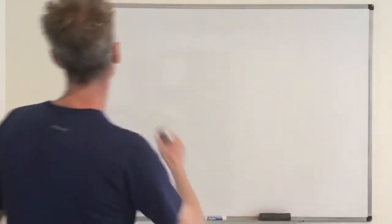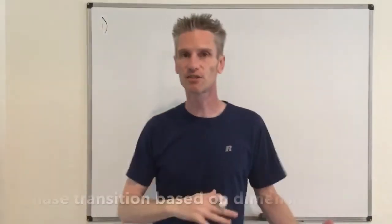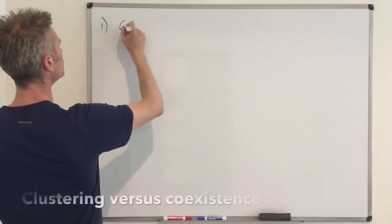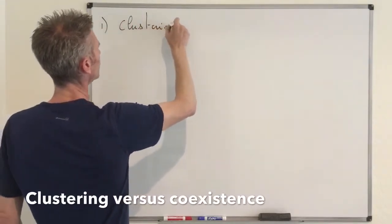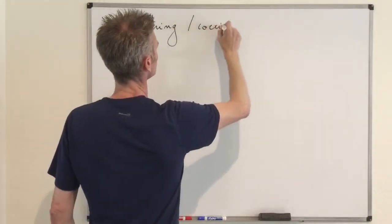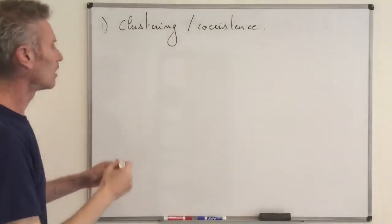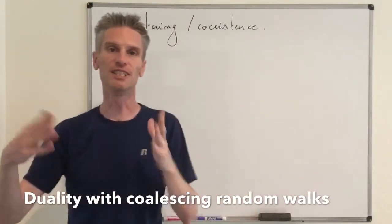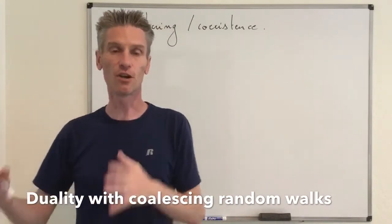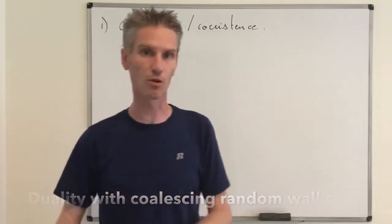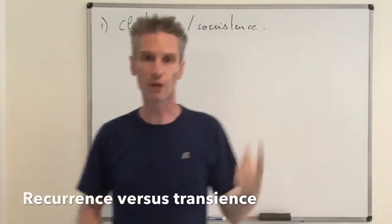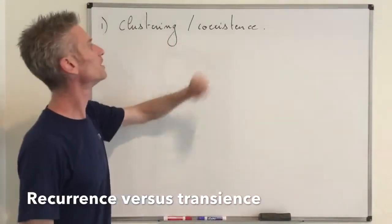The first important result about the model is exactly what we proved in the previous video: there is a phase transition going from dimension less than or equal to two to dimension strictly larger than two, and so a phase transition between a phase of clustering and a phase of coexistence. The proof was based on looking at the duality relationship between the voter model and its dual, which consists of a system of coalescing symmetric random walks.